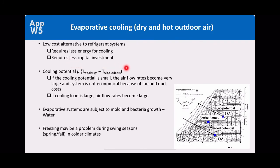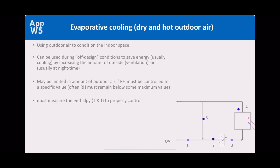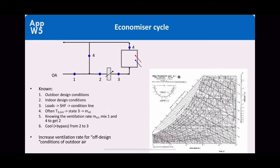Evaporative cooling requires less energy and less capital investment compared to conventional cooling. An economizer uses a damper to recirculate cool outdoor air or return air through the system loop without full heat exchange, reducing the cooling or heating load by reintroducing already-conditioned outdoor or return air into the space.